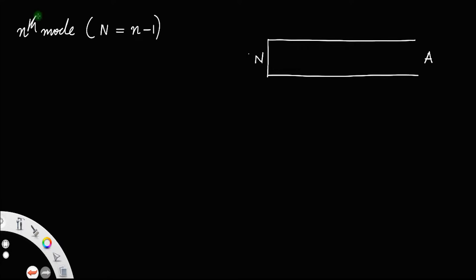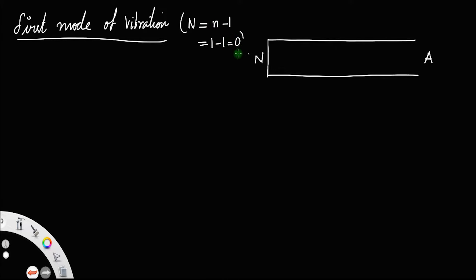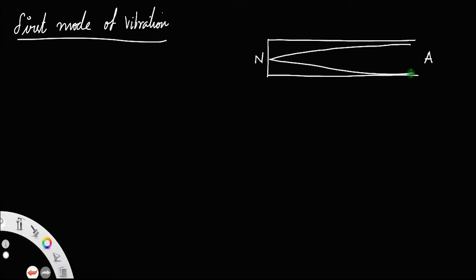Let us discuss the first mode of vibration. For the first mode, n equals 1, so the number of nodes formed between the ends is n minus 1, which is 1 minus 1 equals 0. So no nodes will be formed between the ends of the pipe. The vibration will be like this.